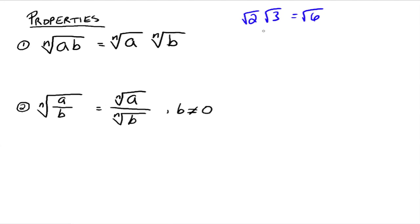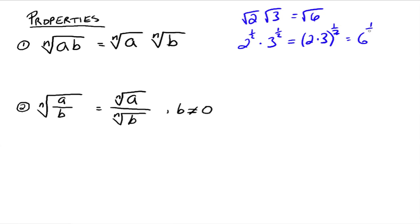Because they're both square roots, we can multiply the two radicands together and get the square root of 6. The reason this works is that this can also be written as 2 to the 1/2 times 3 to the 1/2, since square roots are the same as raising to the 1/2 power. From a property of exponents, that can be written as (2 times 3) to the 1/2, giving us 6 to the 1/2, which is the square root of 6. So vice versa, the square root of 6 can be rewritten as the square root of 2 times the square root of 3.